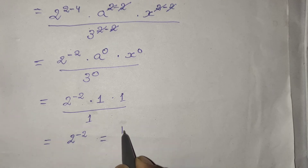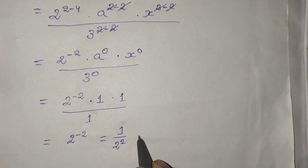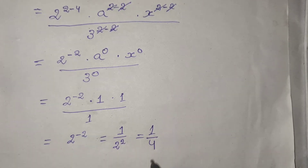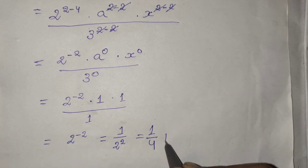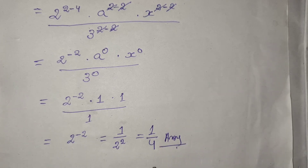So the final answer is 1 upon 4. This is the answer. This will help you understand. After this, we will solve the 2nd number question.